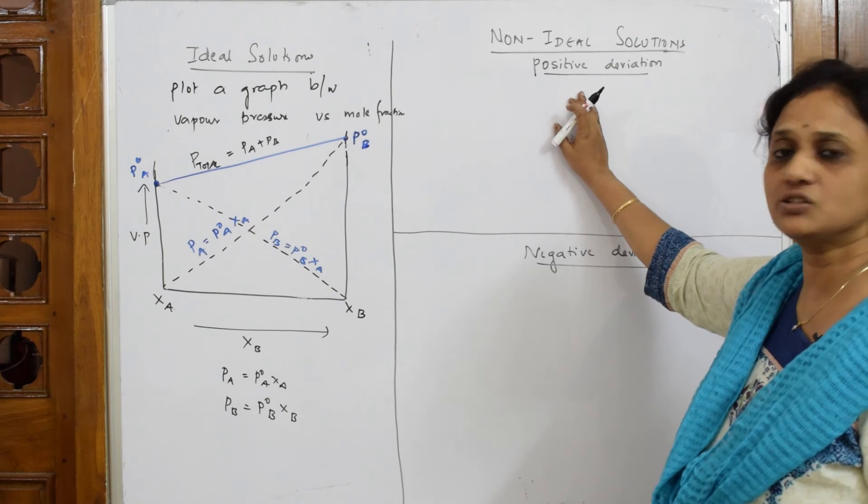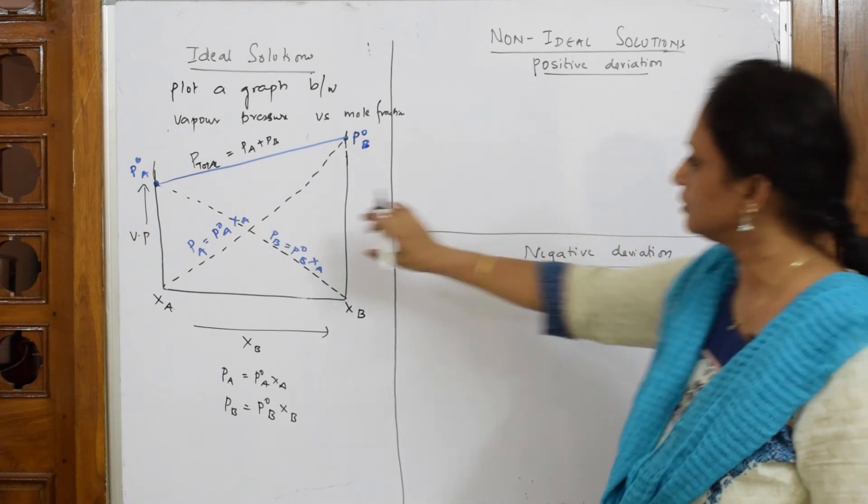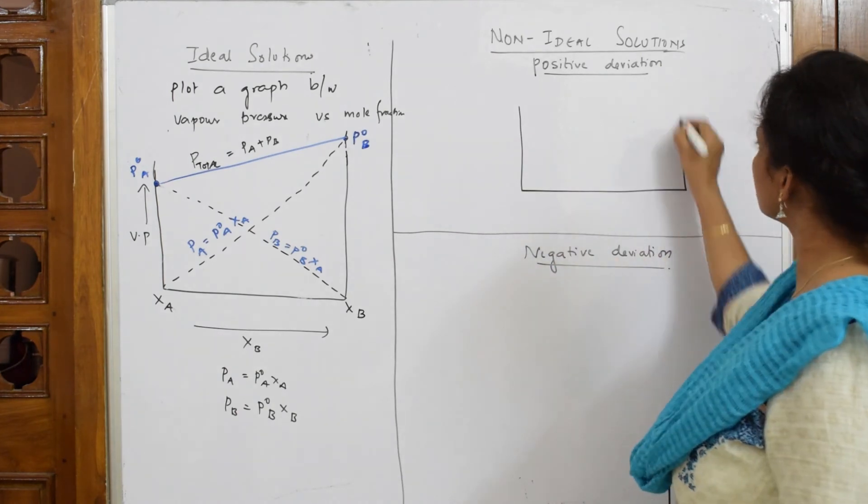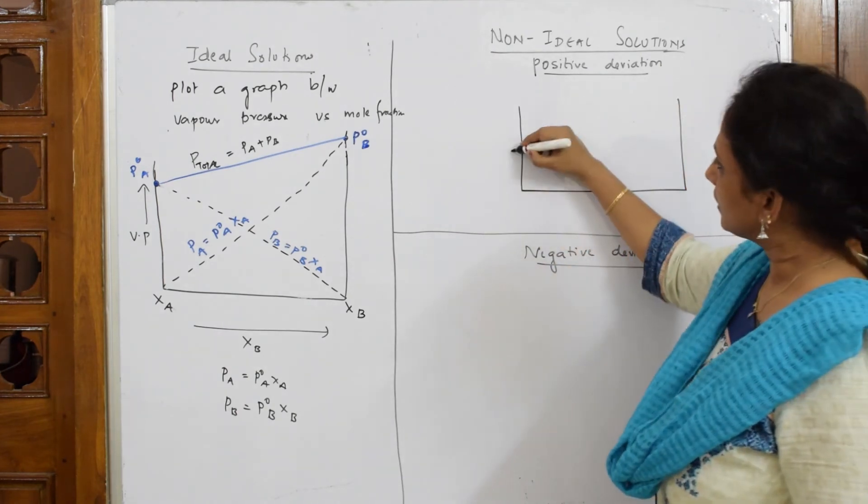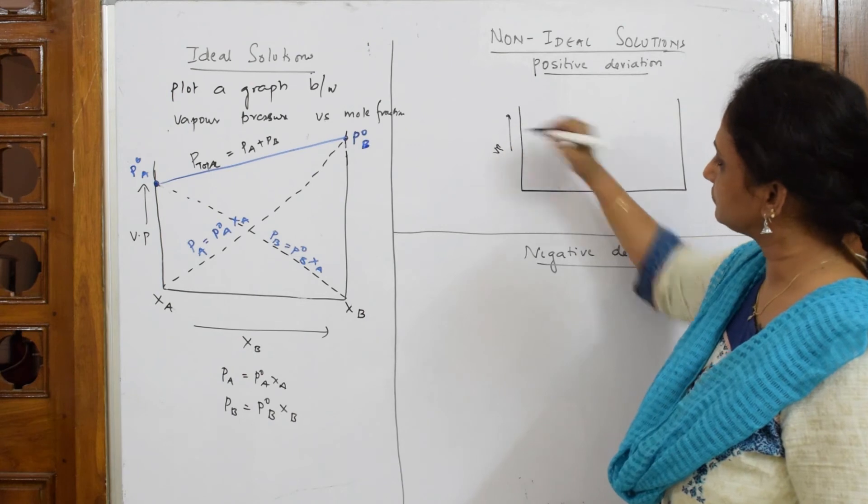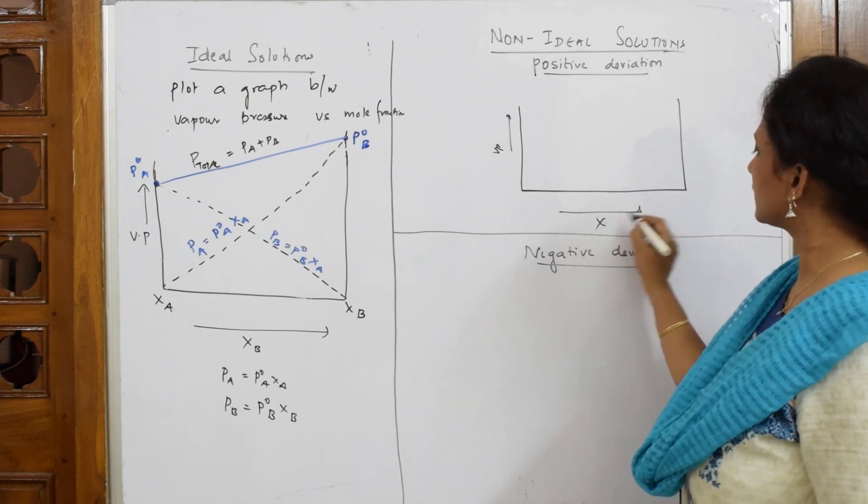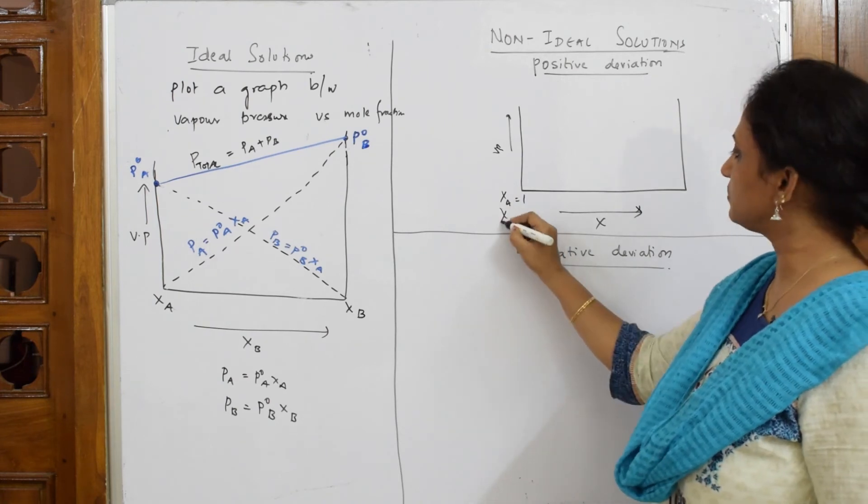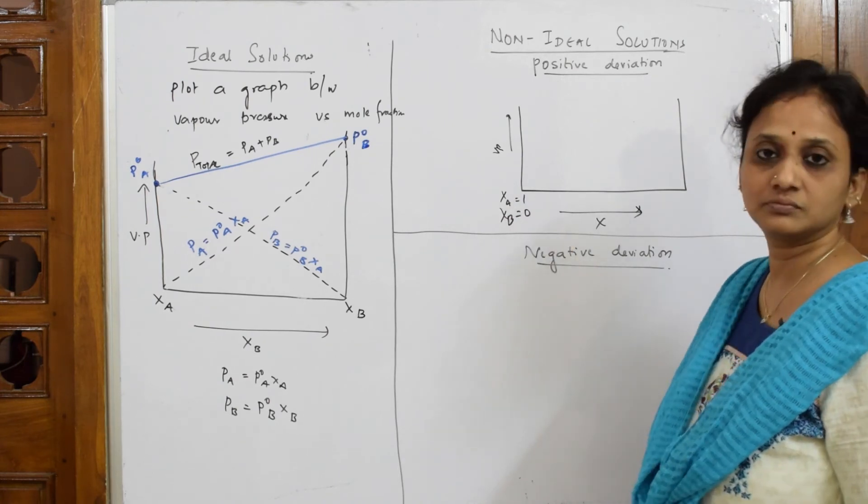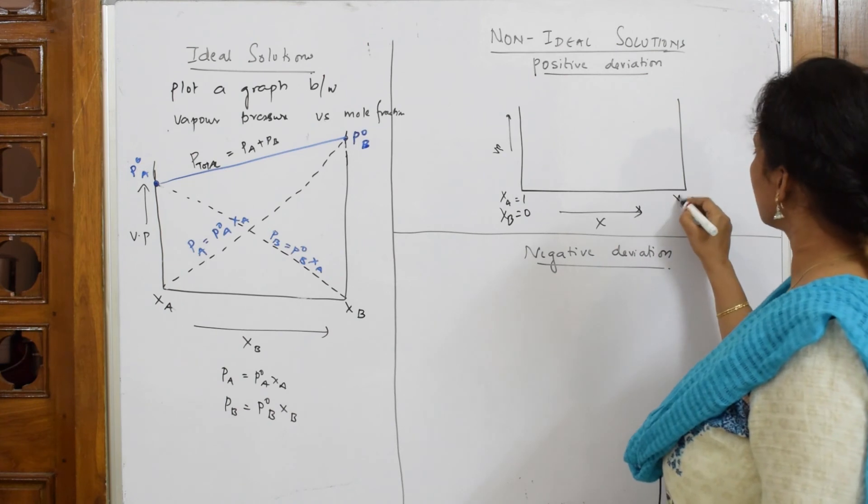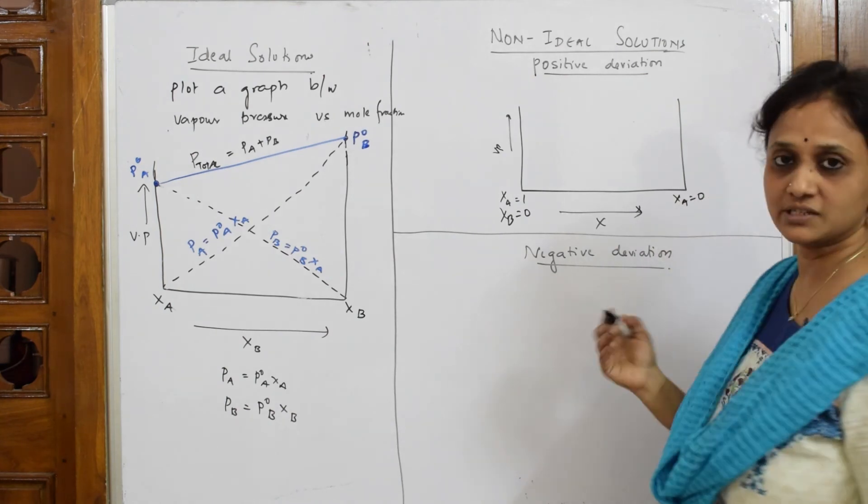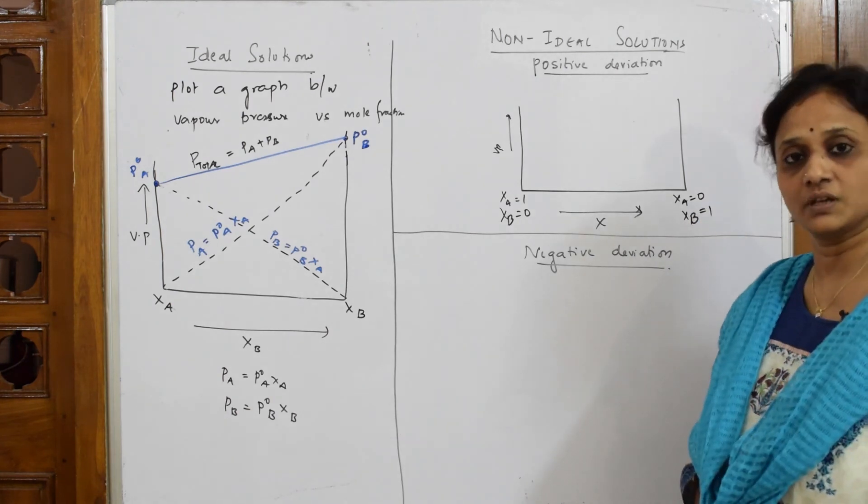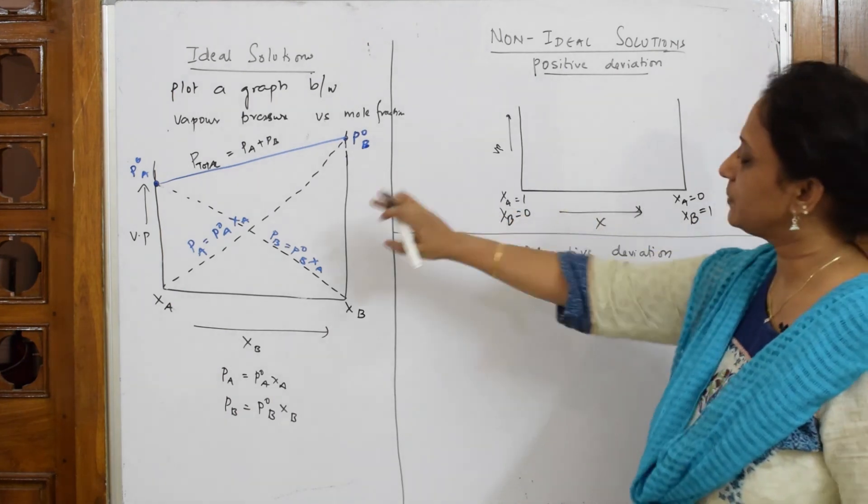Whenever non-ideal solution positive deviation is given to you, exactly copy this. So, exactly copying, first draw this, write vapor pressure here, write mole fraction here and initially XA is equal to 1, XB will be 0. Later on, XA will become 0 because the concentration and XB will become 1. Simple.